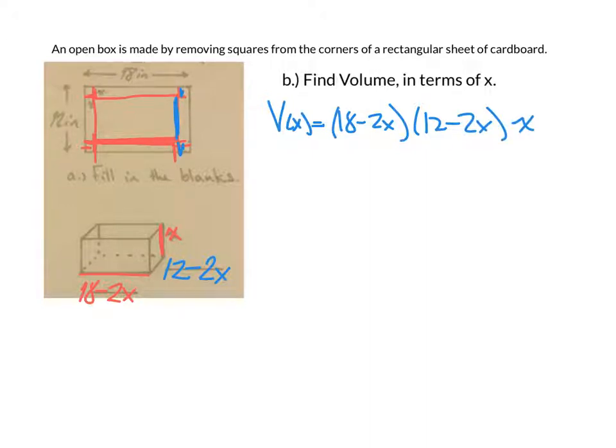We can do a little foiling, and you should get this to come out to be 4x³ - 60x² + 216x.